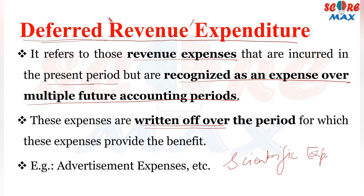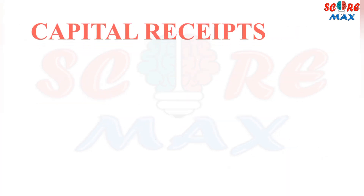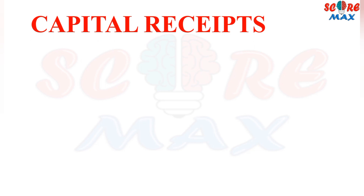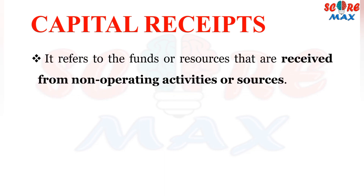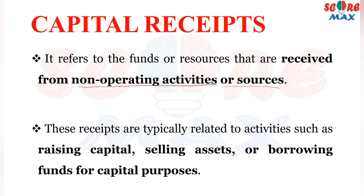Now moving ahead to the receipts portion. The first kind is capital receipts. Capital receipts refer to funds that are received from non-operating activities or sources. These include receipts from raising additional capital, selling of assets, or borrowing funds for capital purposes. For example, if we sell an old asset, the money received is a capital receipt, because selling an asset is a non-operating activity.